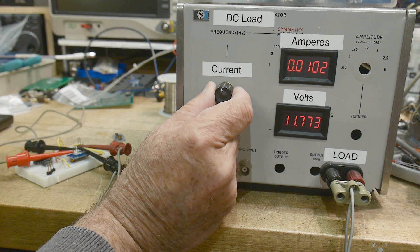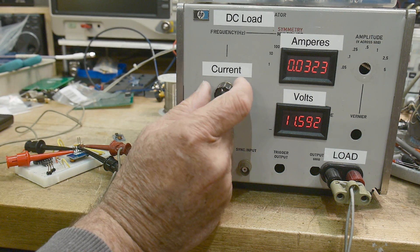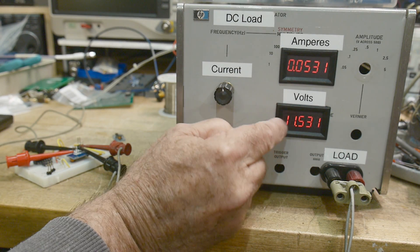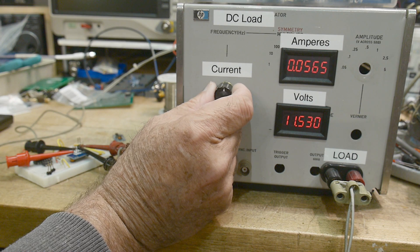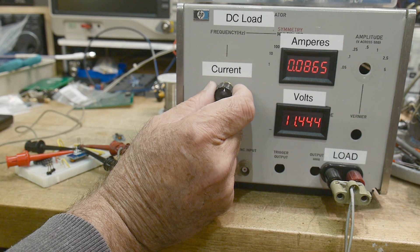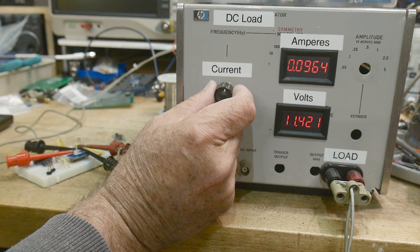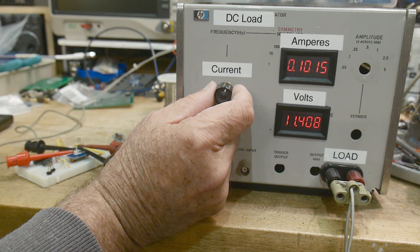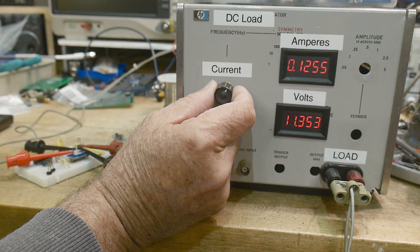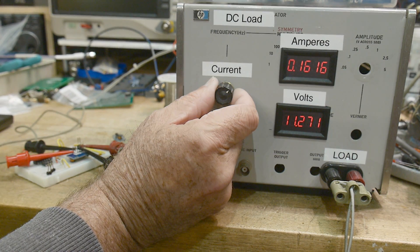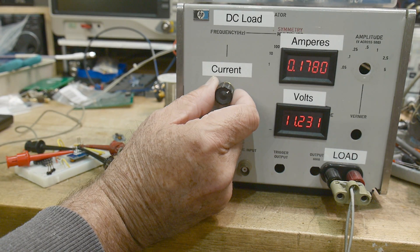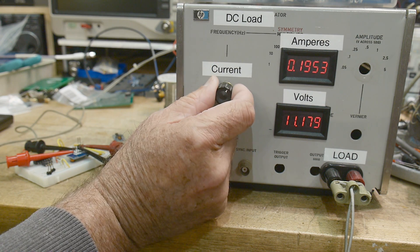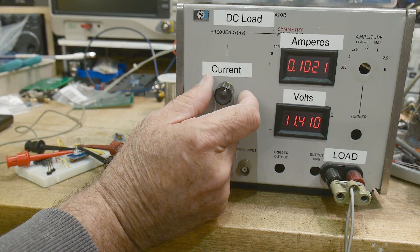And as we start increasing the load, it's starting to drop right away. So here's 50 milliamps, 11.5, 85 milliamps, 90 milliamps. Let's go to 100 milliamps. 11.4 and see where it drops down to 11. 200 milliamps, it's 11.1. Yeah, that's not very good.